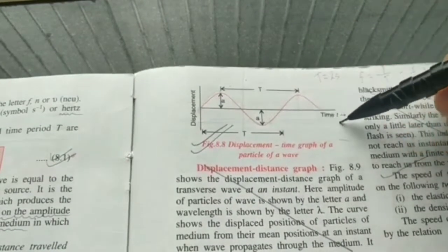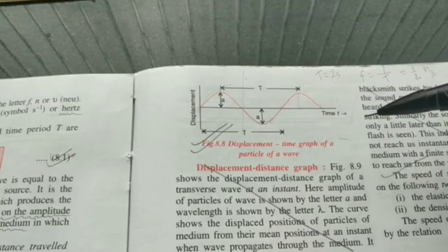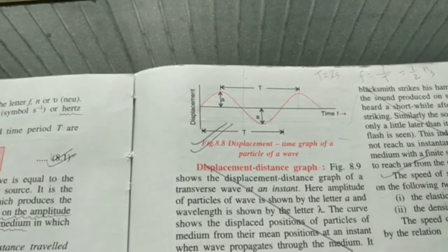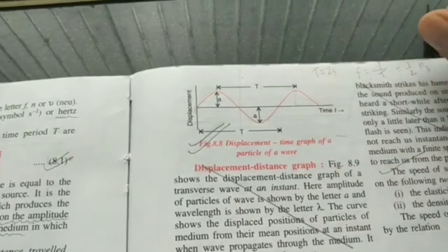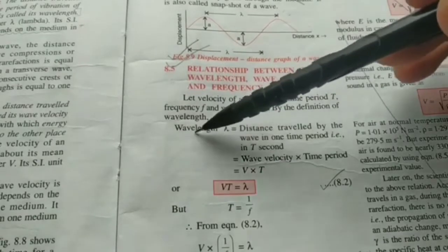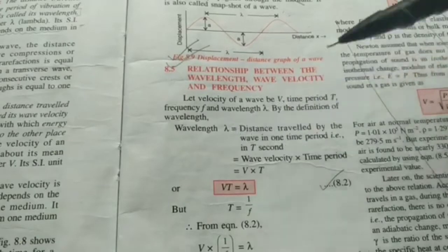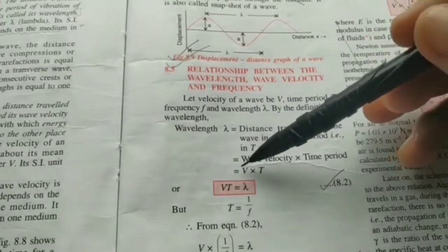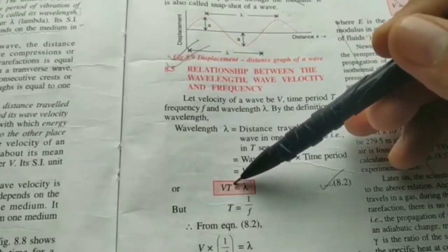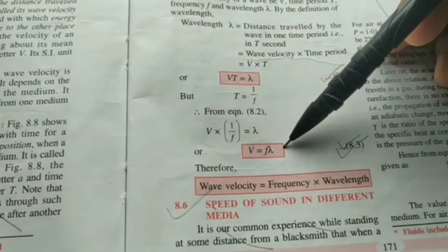Wave velocity is the distance traveled by the wave in one second, with SI unit meters per second. The speed of sound depends on the elasticity and density of the medium. The relationship between wavelength, wave velocity, and frequency: wavelength is the distance traveled in one time period, and distance = velocity × time. So lambda = velocity × time period. Since time period is the reciprocal of frequency, substituting and rearranging gives: velocity = frequency × wavelength. This formula is used in numerical problems.